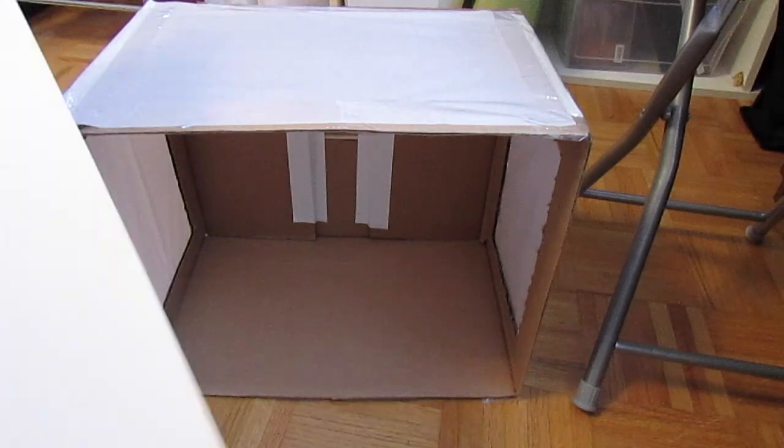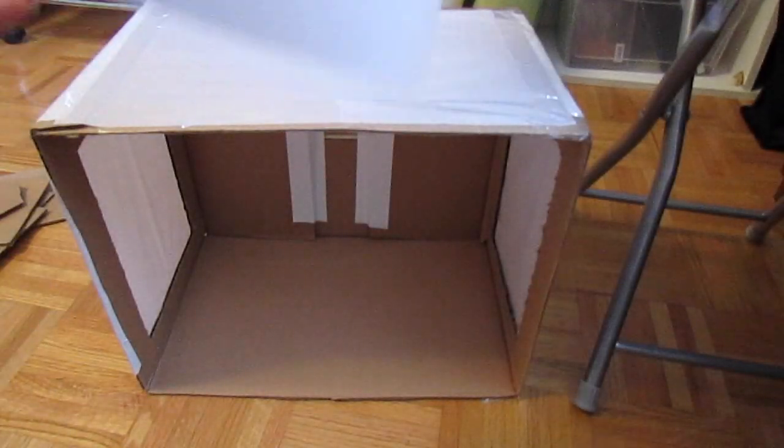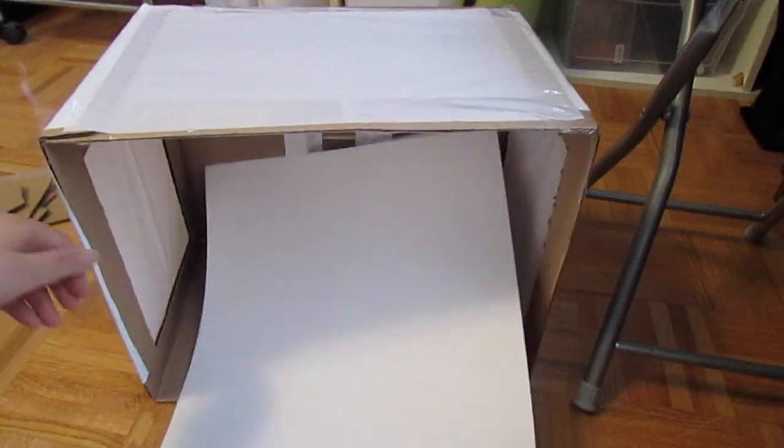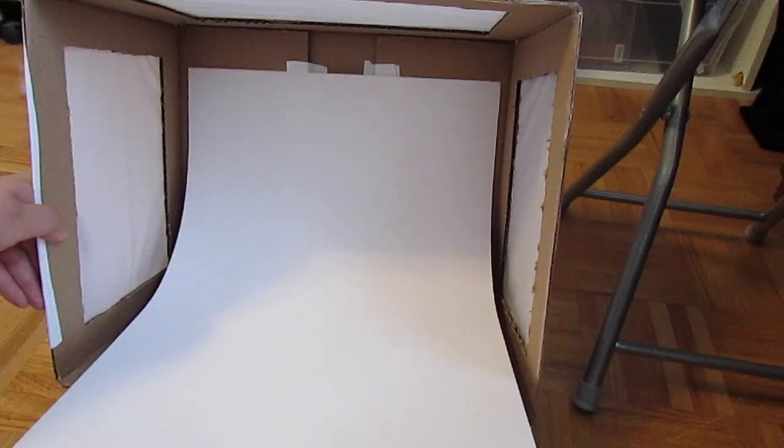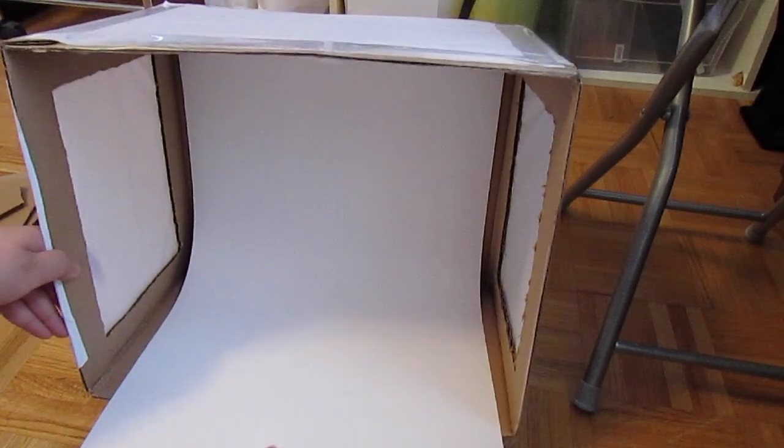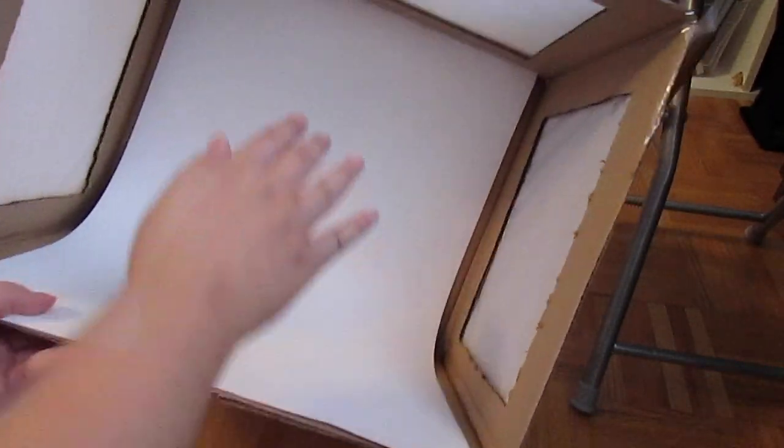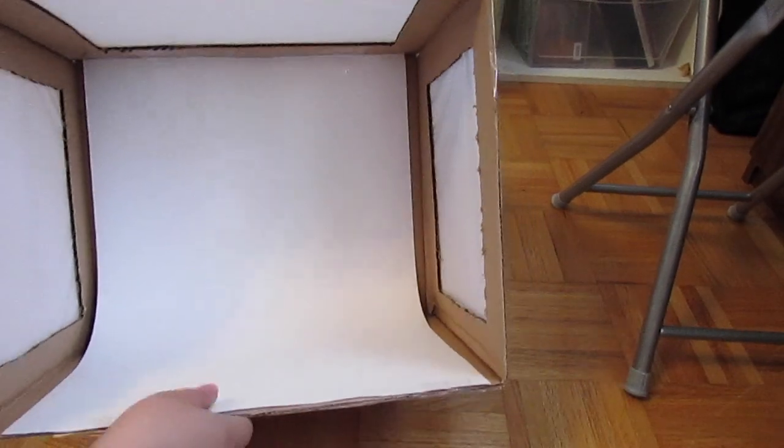So next you take your Bristol board and then when you're sliding it in, make sure the Bristol board stays at a curve rather than a 90 degree angle. And you're going to slide it in to see how much Bristol board you need before you have to cut it. So slide it in here and push it in as much as you can to the back. And then if you want you can cut off the excess which is what I'm going to do. So once your Bristol board is nice and cut, you're going to tape down the bottom of it and tape the top of the inside. And as you can see, it curves on the inside rather than having a 90 degree angle because we don't want harsh lines or shadows in our pictures. And now that you've taped your Bristol board inside, it should be completed.